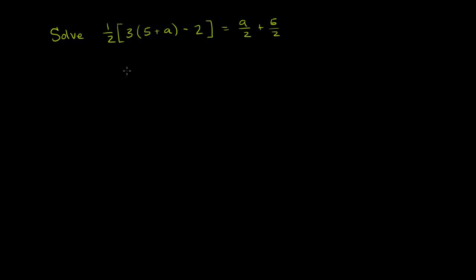Here's a slightly more involved linear equation. We're asked to solve for a. We have 1 half times 3 times the expression 5 plus a minus 2 is equal to a over 2 plus 5 over 2. It looks very daunting, but if we take it step by step, we'll see that it's actually a pretty reasonable problem.